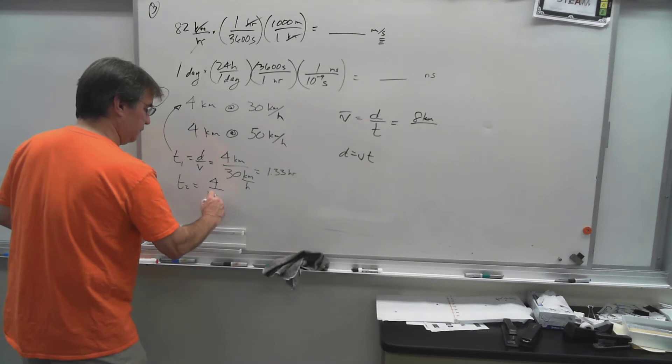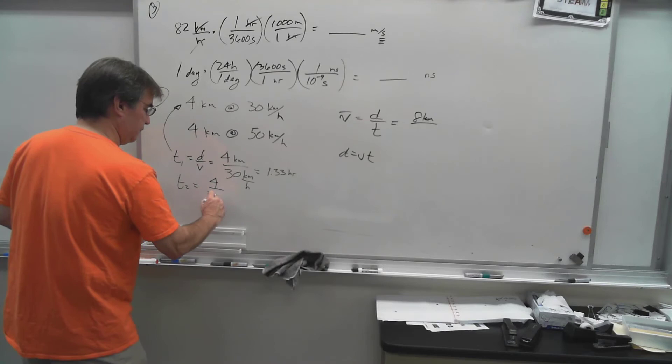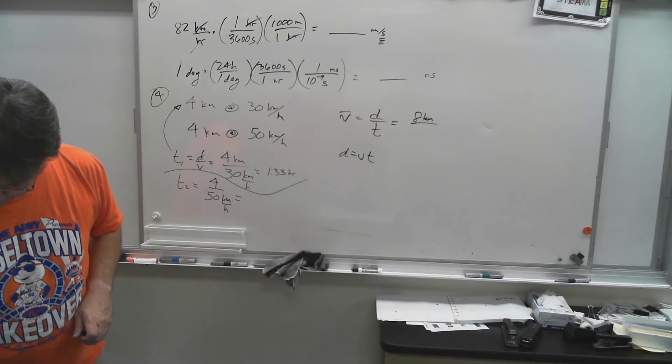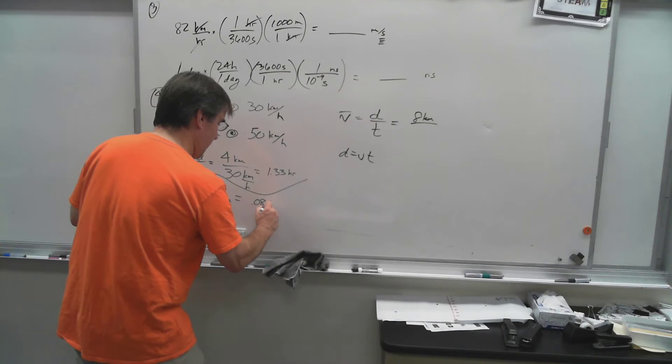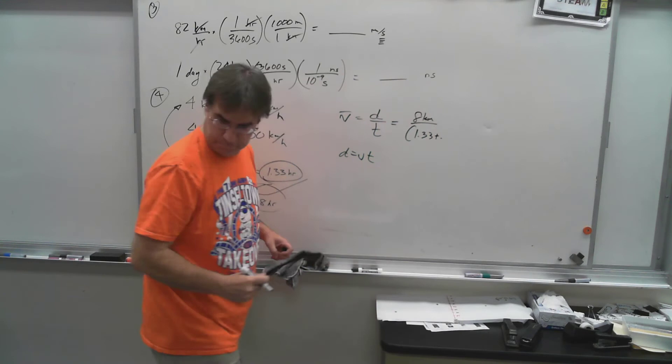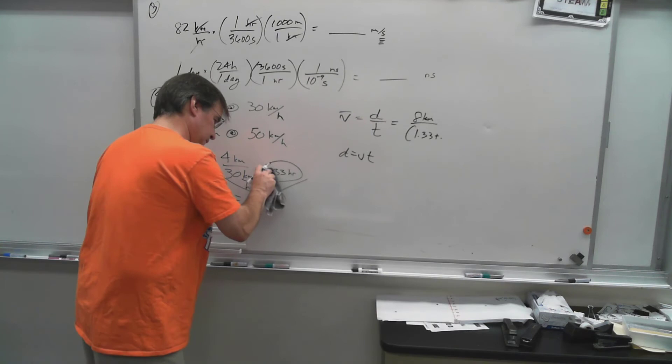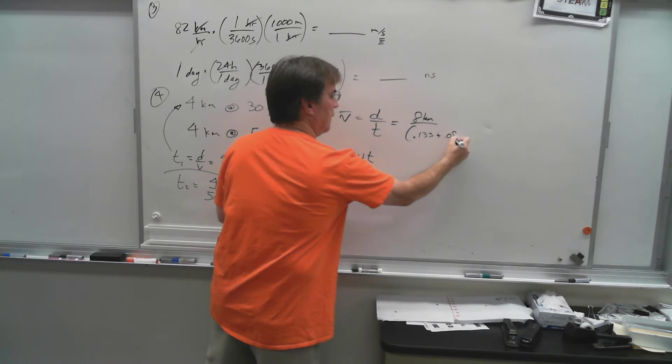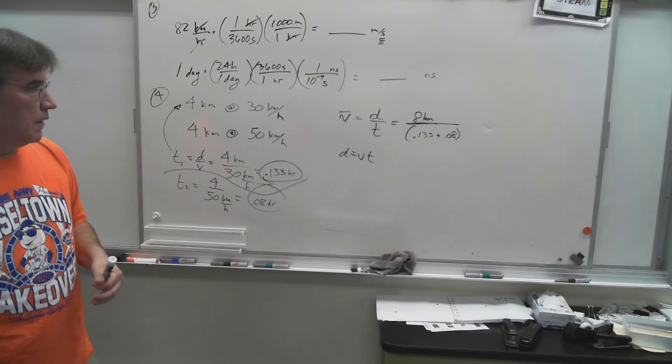For time two, we're going to do four kilometers divided by 50 kilometers per hour. And notice, because you're going a whole lot faster, that time is going to be less. Four divided by 50 in this case, you get 0.08 hours. Well that's how much time you spend on this whole trip driving. So 0.133 plus 0.08 hours.